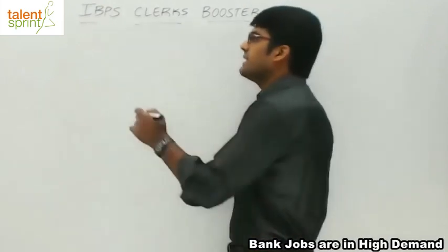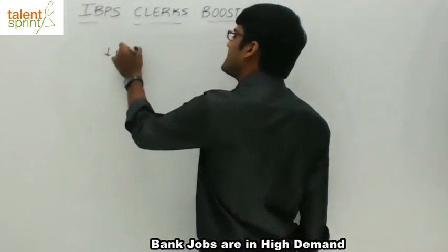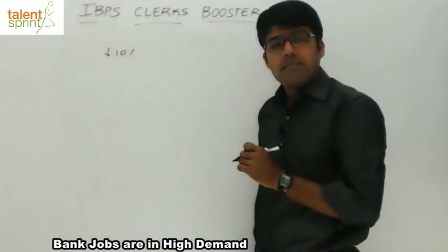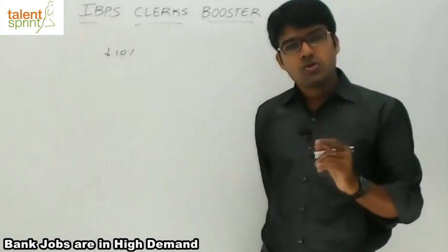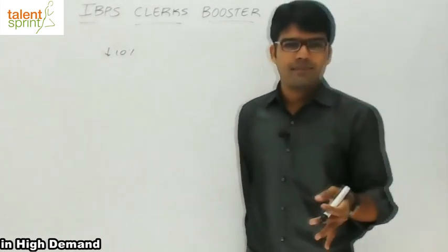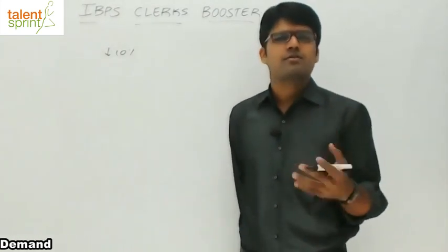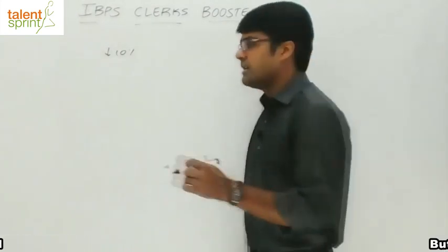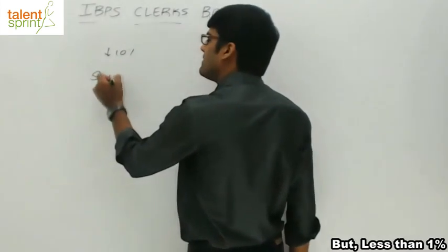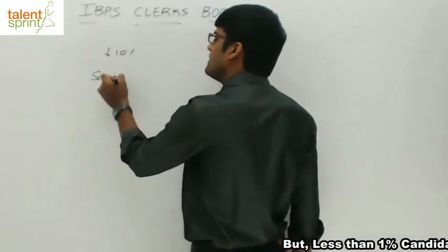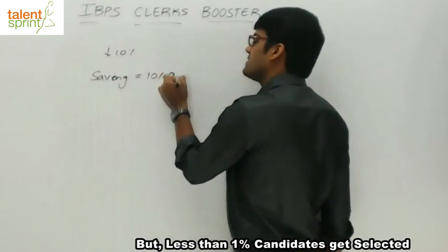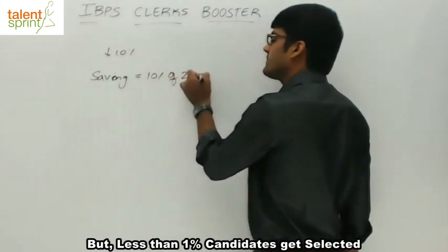The decrease in price is 10%. That means savings should also be 10%. If the price is decreased by 10%, savings should be equal to 10%. So how much amount will I save? My savings will be equal to 10% of total expenditure, which is equal to 270.